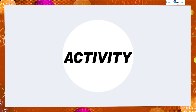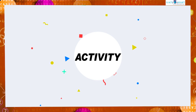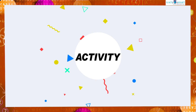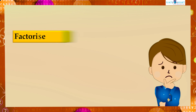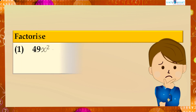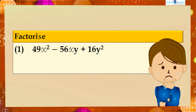Before winding up, let's check how much you understood by doing an activity. Factorize: first, 49x squared minus 56xy plus 16y squared; and second, 4x squared minus 20x plus 25.